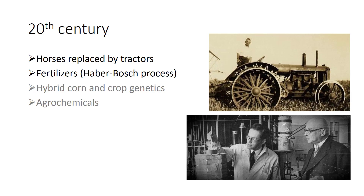Tractors with liquid-fueled internal combustion systems were adapted to a wide range of agricultural tasks, from field preparation to planting to harvest. These tractors eliminated the need for draft animals, making land previously used to grow draft animal feed available for human food production. The introduction of tractors also reduced the level of human labor required by the agricultural sector.